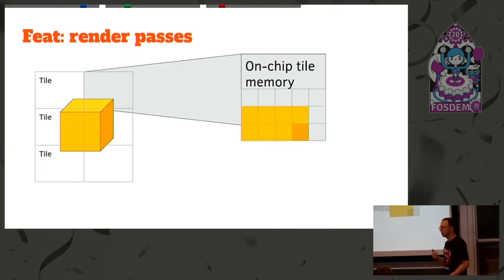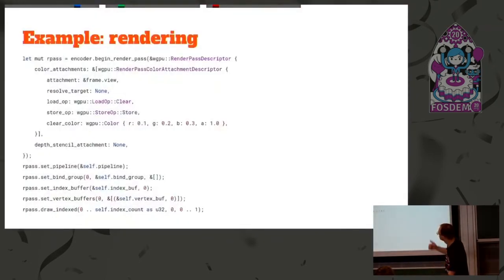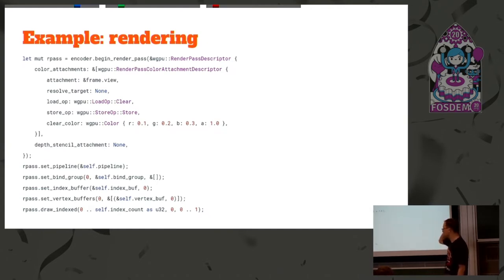This is acknowledged by all the native APIs today — it was there from the beginning in both Vulkan and Metal, and D3D12 has also recently added render passes. You can see here how we create a render pass and specify the load operation to be 'clear,' which means we don't want to load existing content. We specify the clear color. Inside the render pass we do all the rendering and set all the state: the pipeline, the bind group, index and vertex buffers, and issue the draw call.